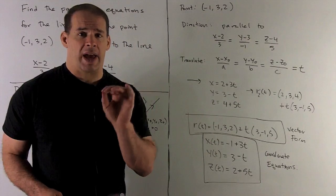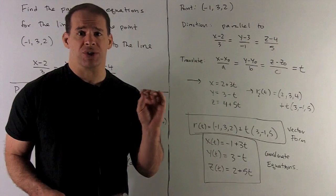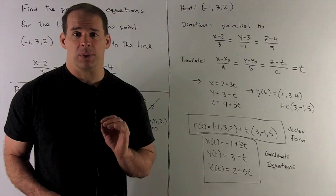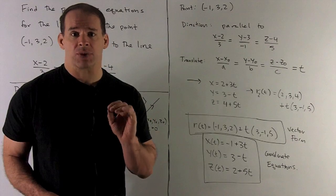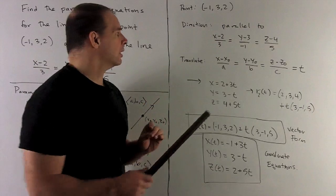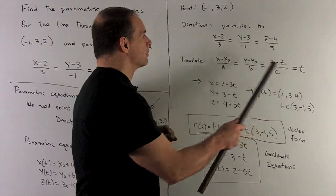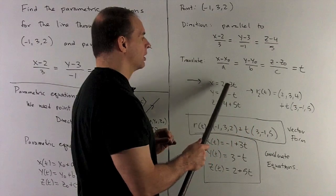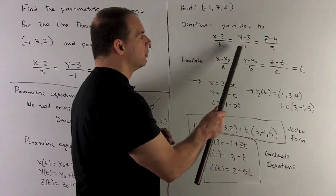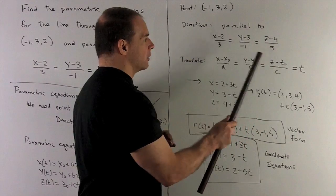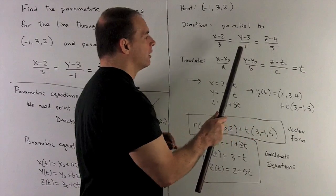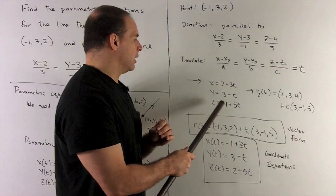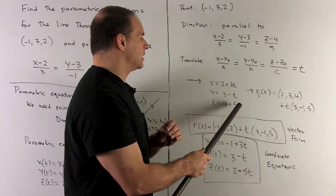If you had coefficients before x, y, or z, here's what you do: set your equations equal to t, then solve for x, y, and z. Multiply t by 3 and move the 2 over, giving 2 plus 3t. Move the -1 over, giving -t. Move the 3 over, giving y equals 3 minus t. And z equals 4 plus 5t.